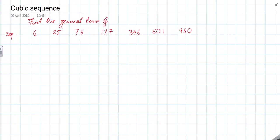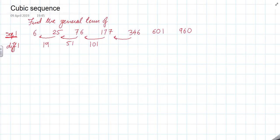I call the original sequence 'sequence 1'. I take the first difference: 25 minus 6, 76 minus 25, 177 minus 76, and so on. Then 601 minus 255, 960 minus 601 is 359. You keep on taking the differences.